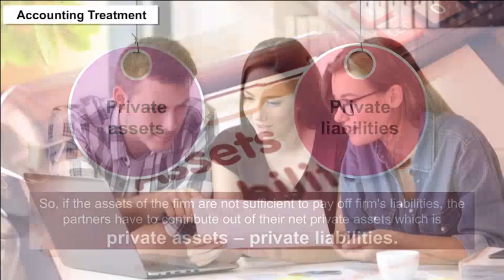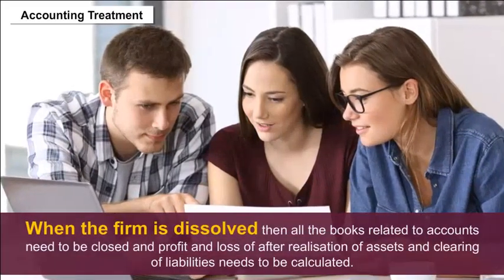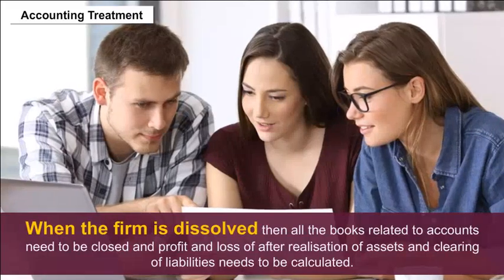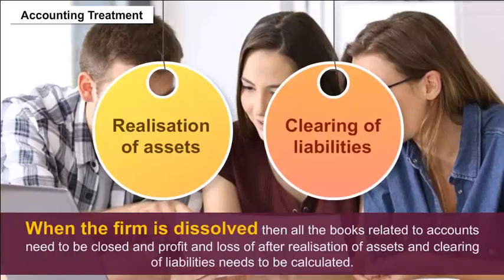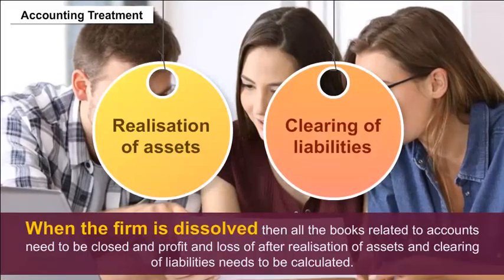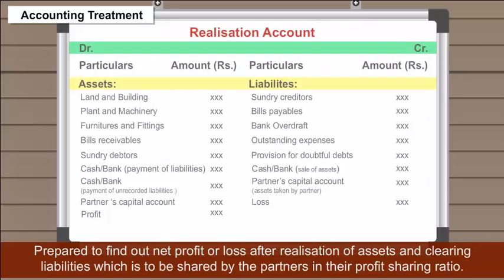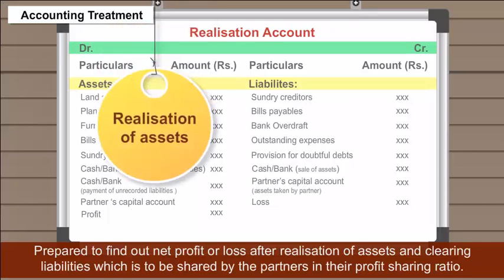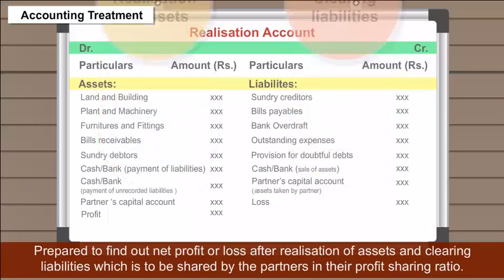Accounting Treatment. When the firm is dissolved, all books of accounts need to be closed, and profit or loss after realization of assets and clearing of liabilities needs to be calculated. A realization account is prepared to find out the net profit or loss after realization of assets and clearing liabilities, which is then shared by the partners in their profit sharing ratio.